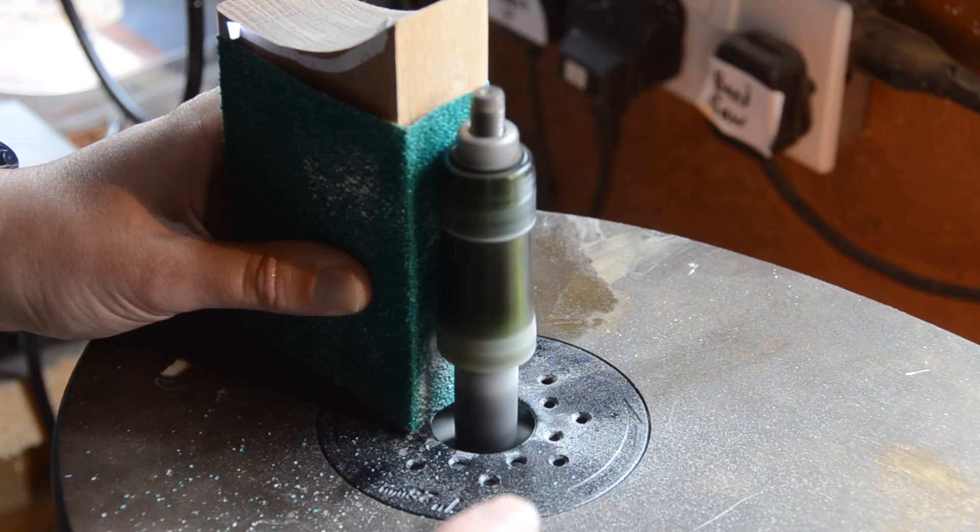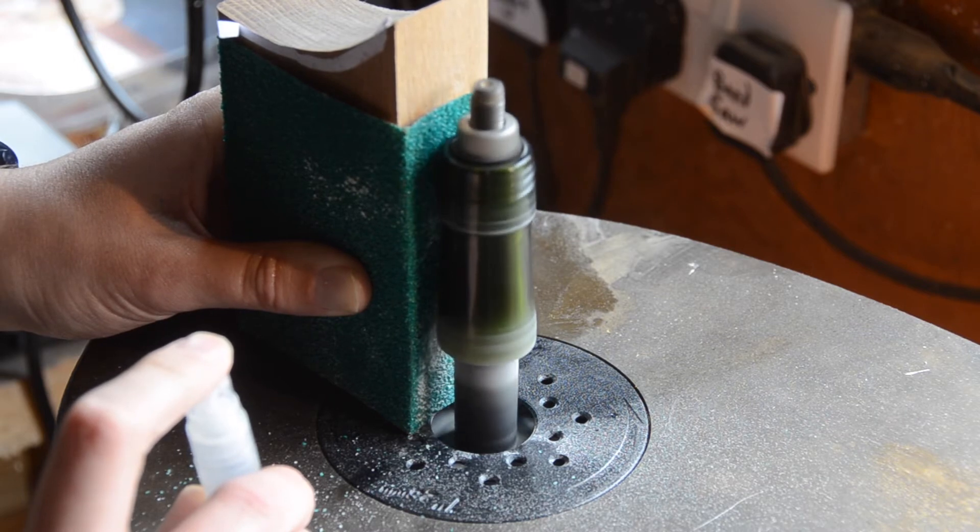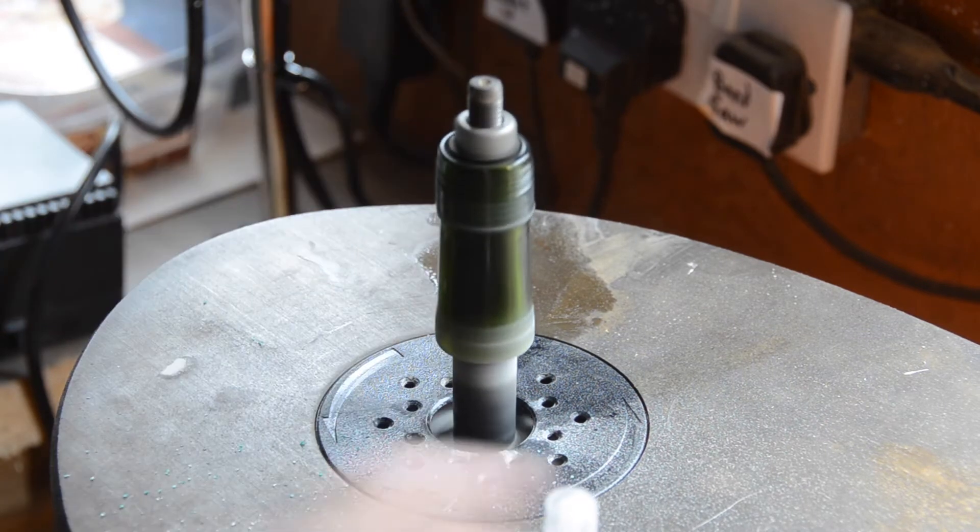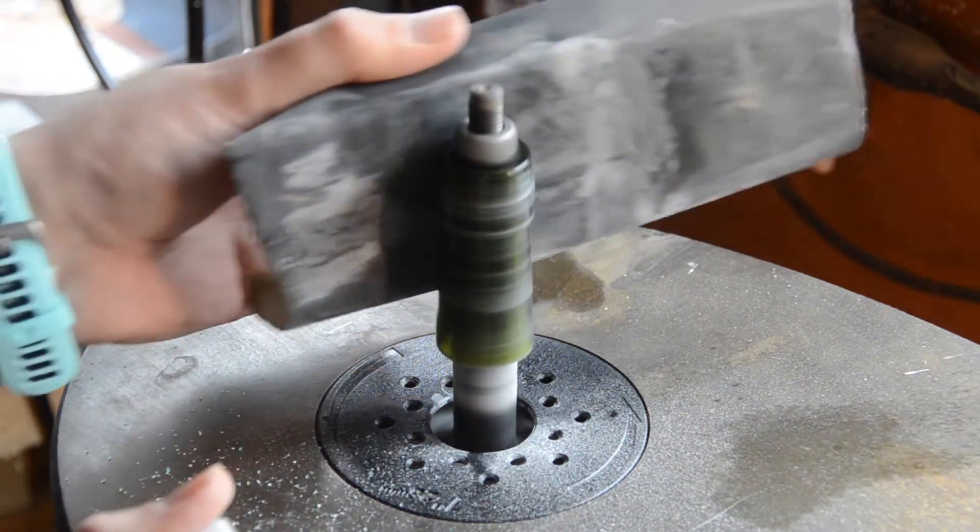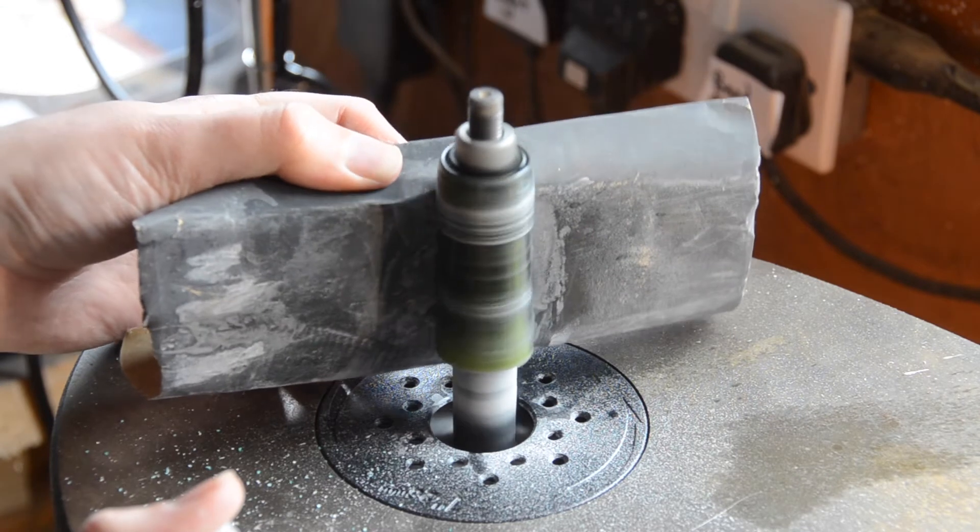It took me much longer than it should have to realize that the glass is much tougher and more abrasive than most of the things in my workshop. Eventually I twigged that for shaping, I was going to have to rely on the rubbish diamond grinding ends for my Dremel.